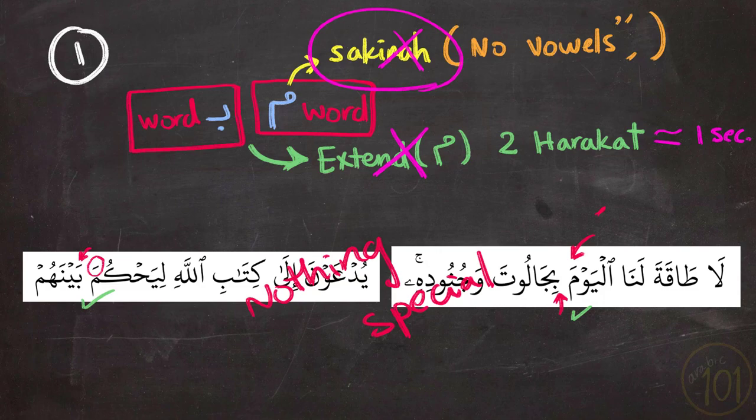So Meem Sakina followed by a Ba' gives us an extended Meem for two Harakat.